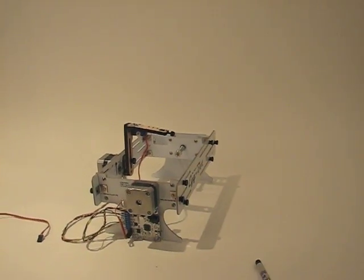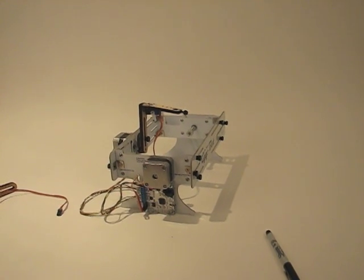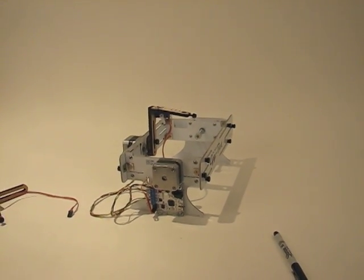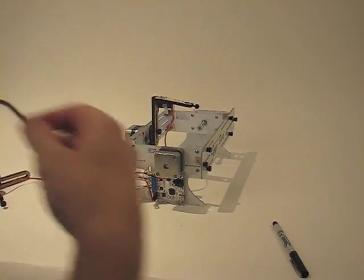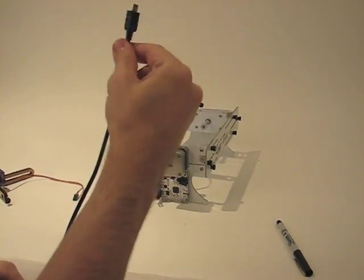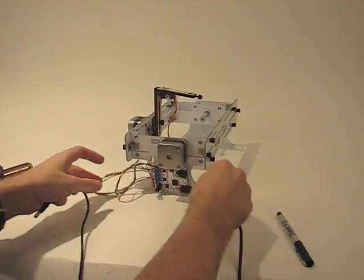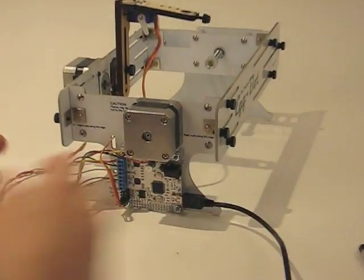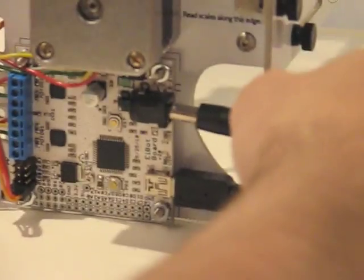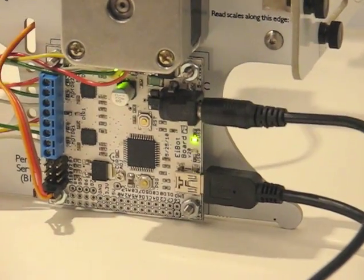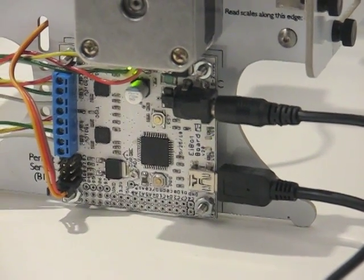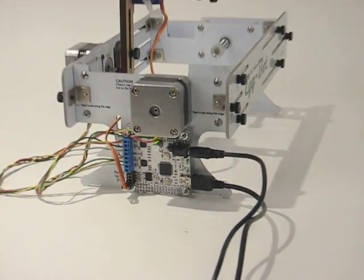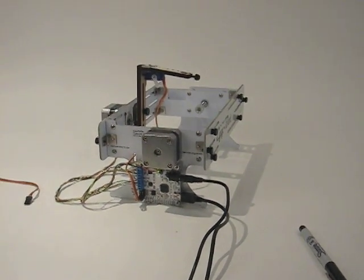So the first thing we need to do, of course, is give power and a computer connection to our robot. That is the business end of the USB cable, and here is the 9-volt power cable, and now we've got life on our board. And the other end of this USB cable needs to get to our computer over here.